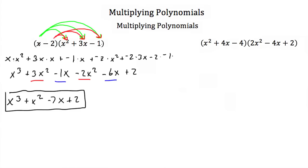Let's look at our next example: x squared plus 4x minus 4 times 2x squared minus 4x plus 2. Here our first polynomial has more than two terms, so you can't use the FOIL method, but we'll do something similar. We're going to take every term in the first polynomial and multiply it by every term in the second polynomial.